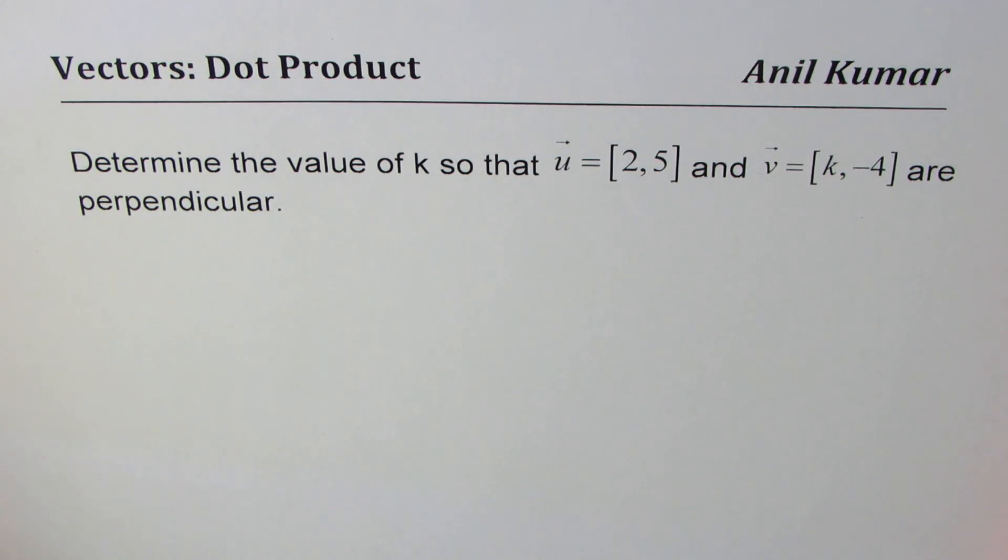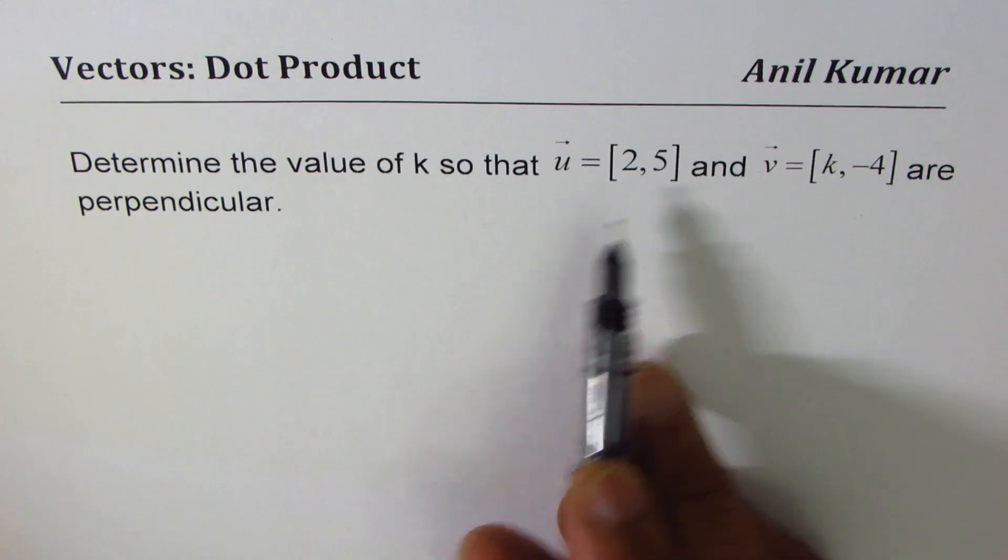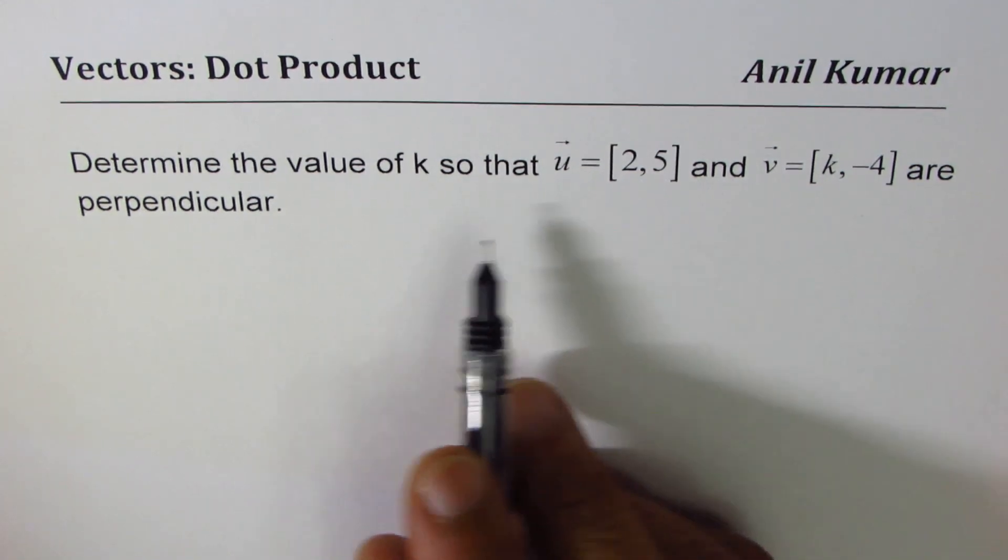You can pause the video, answer the question, and then look into my suggestions. We want the dot product to be 0 if these two are perpendicular. So that's the key.